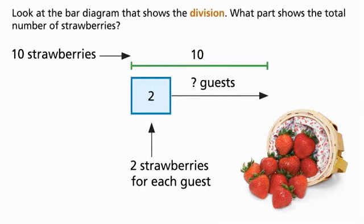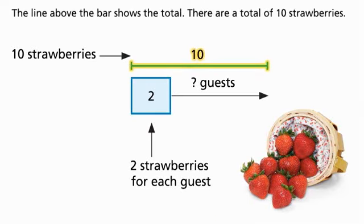Look at the bar diagram that shows the division. What part shows the total number of strawberries? The line above the bar shows the total. There are a total of ten strawberries.